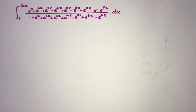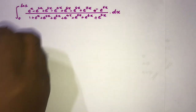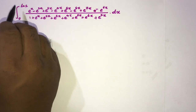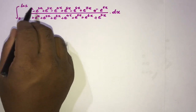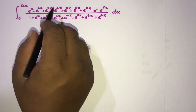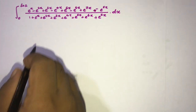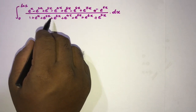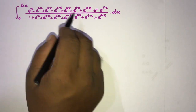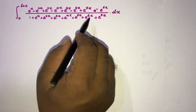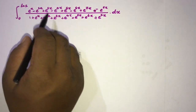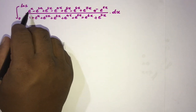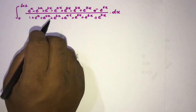Welcome to the Mathematics MI channel. Today we are going to solve another interesting integral — the integral from 0 to natural log of 2 of e to the x minus e to the 2x, and so on, where the denominator has 1 plus e to the x, e to the 2x, plus e to the 3x, beginning with e to the x.